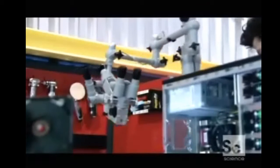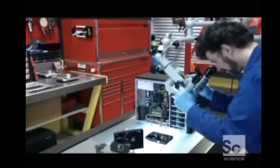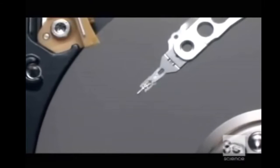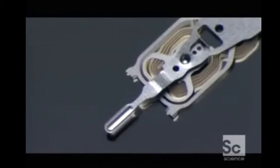The space between the head and the surface of the disk is 5,000 times thinner than a human hair. The heads float on a cushion of air created by the spinning disks, an absolutely essential cushion that prevents the head from crashing on the disk.